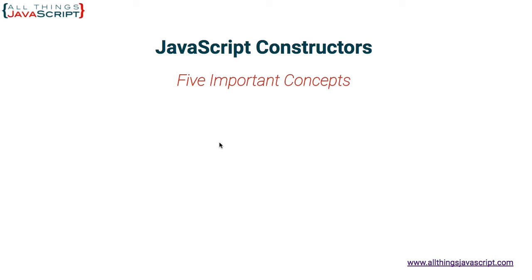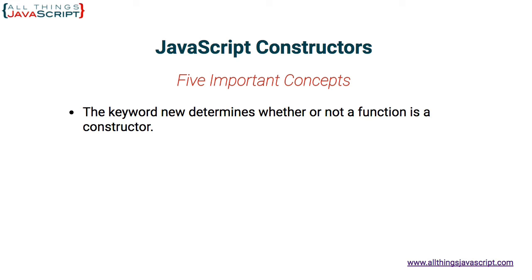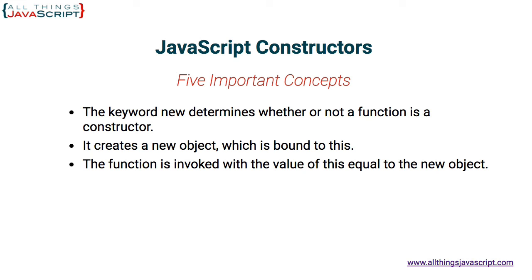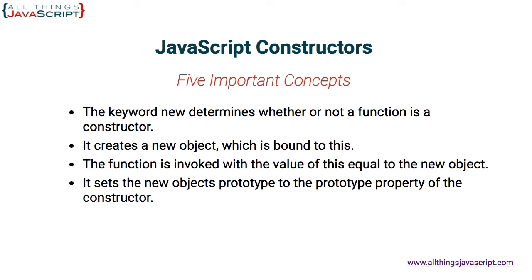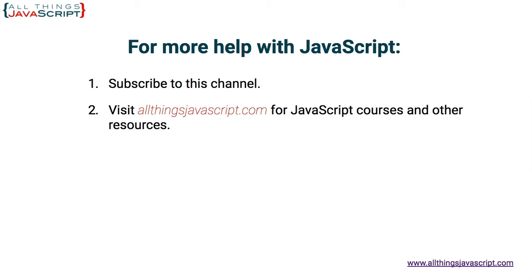Those are the five important concepts of JavaScript constructors: the keyword new determines whether or not a function is a constructor; it creates a new object which is bound to this; the function is invoked and the value of this equals the new object; it sets the new object's prototype to the prototype property of the constructor; and finally, it returns that object. You can subscribe to our channel for new videos every week, and receive additional help at allthingsjavascript.com. Thanks for watching.